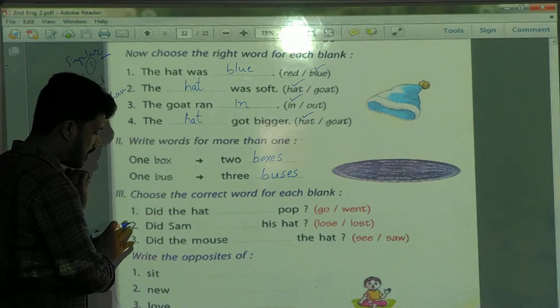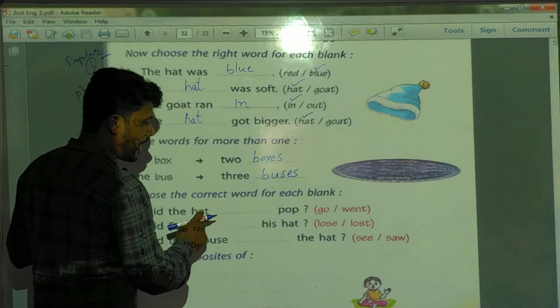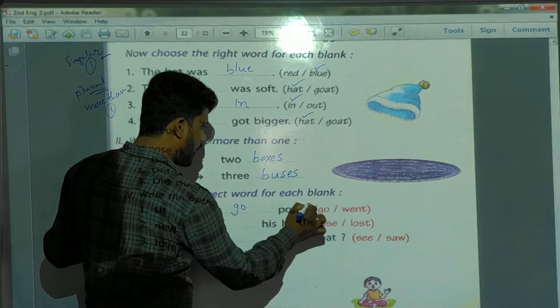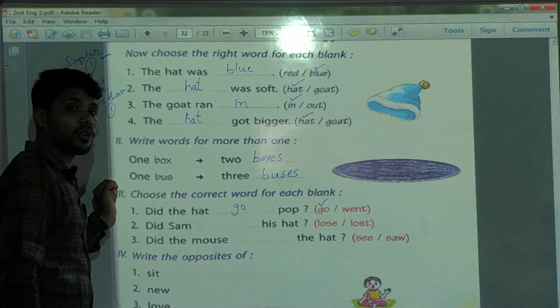This means the action is already finished. So, did the hat go will come or them will come? Go will come. Okay. Did the hat go off?